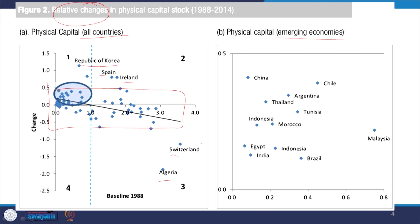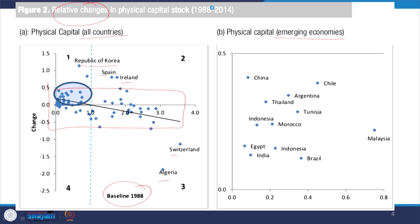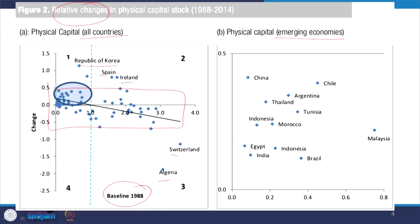The baseline for the changes is 1988. In emerging economies, there is no negative change clearly visible. China's percentage variation is within the limit of 0.5, but at least there is no negative term, and India is near about half of 0.5 — still better than many other countries.